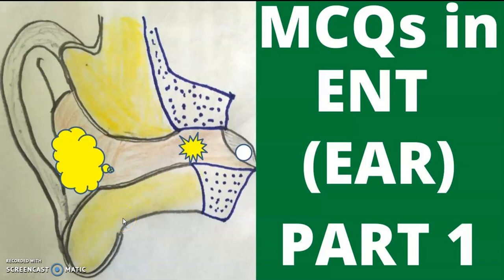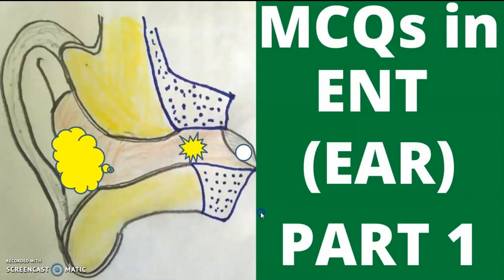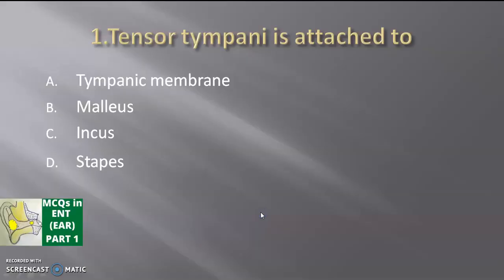Hello everyone, welcome to my YouTube channel Logic Medico. Today's topic is MCQs in ENT. The topic subdivision is Ear, Part One. Let's see the MCQs one by one. Tensor tympani is attached to — the tympanic membrane, malleus, incus, or stapes? Time starts now, 10 seconds will be given.